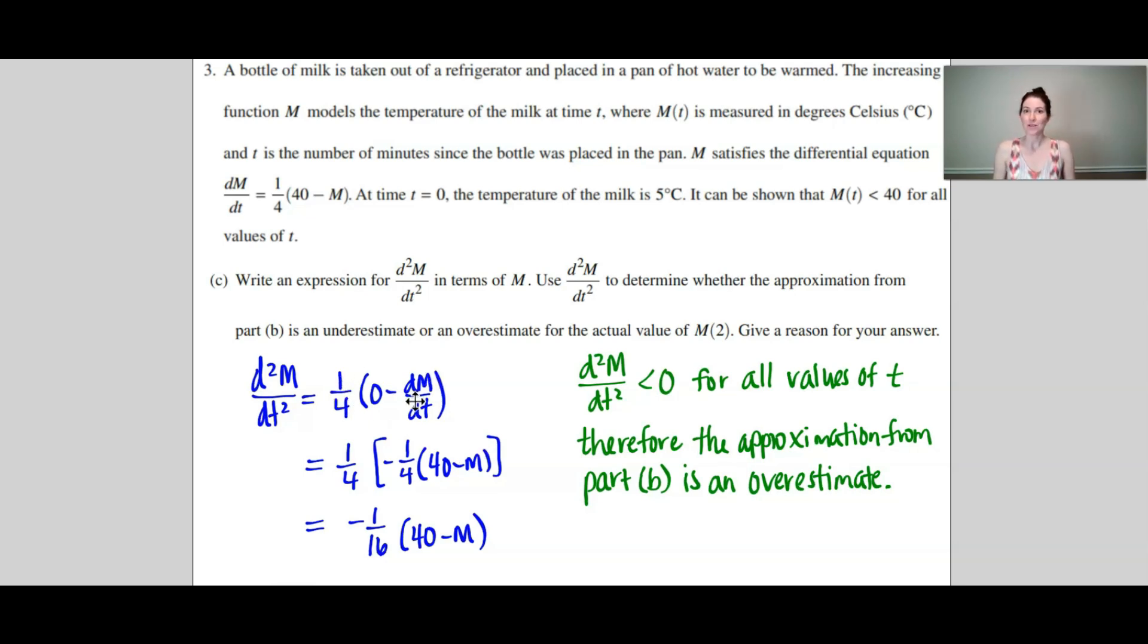And you may be thinking what do I do at this point? Well I know dM/dt—that was given to me in the problem. So with a quick substitution of dM/dt right here, I can see that the second derivative is negative 1/16 times (40 minus M).